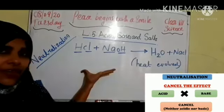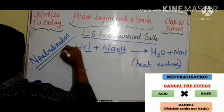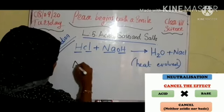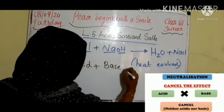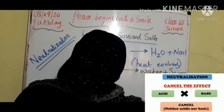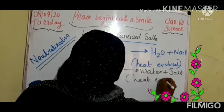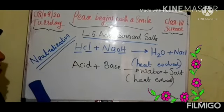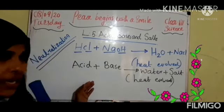This reaction we call neutralization. That is when acid mixes with base, we will get water and salt. Heat is also evolved in this reaction. So this reaction we call neutralization — it is very important.